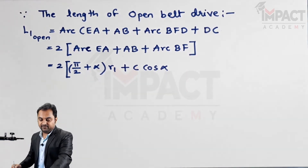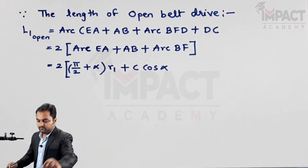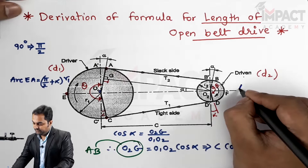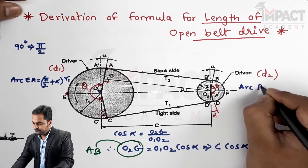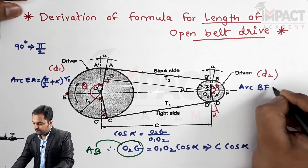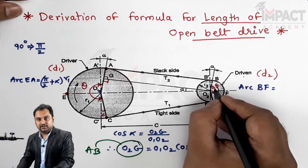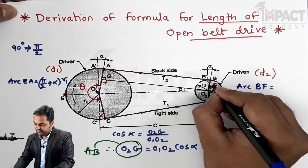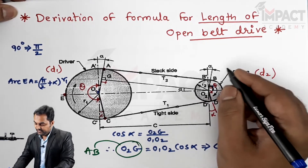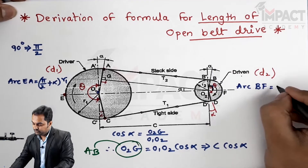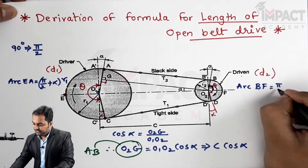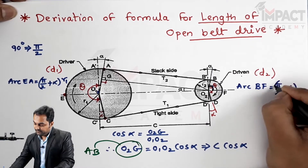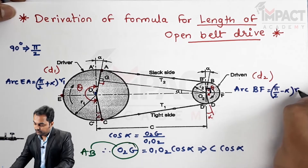For arc BF, its length can be calculated as follows. BF has an angle which is less than 90 degrees — the complete angle is 90, and alpha needs to be subtracted. So arc BF equals (pi/2 − alpha) multiplied by its radius R2.